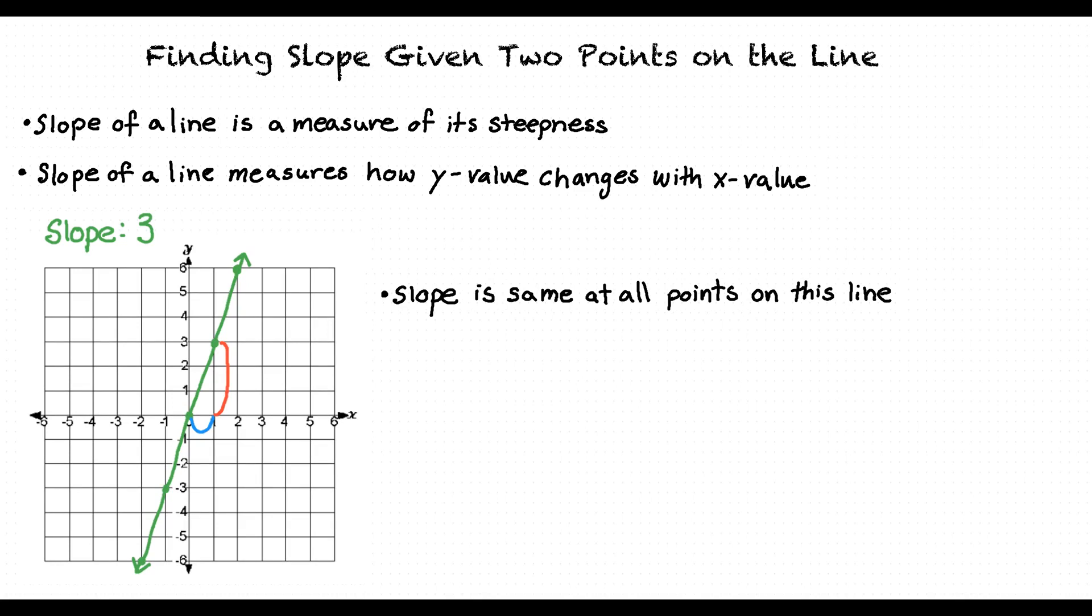How would we find the numerical value of the slope of a line when given two coordinate points? To find the slope of a line given two points, we must find the vertical and horizontal change that occurs between these two points, and use that to find a ratio that expresses a numerical value for the slope.